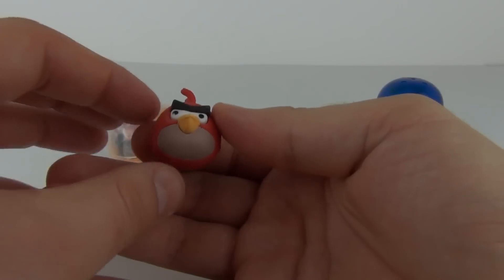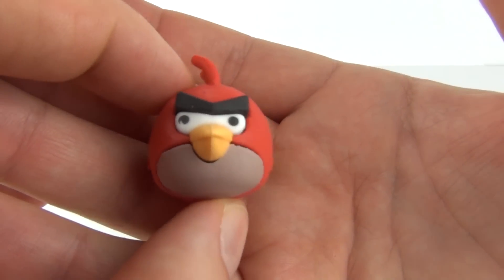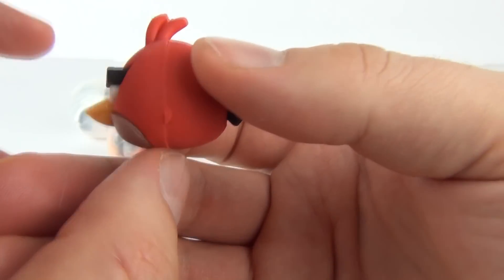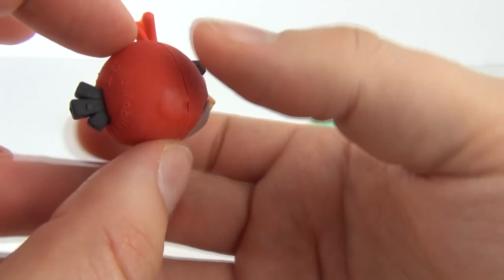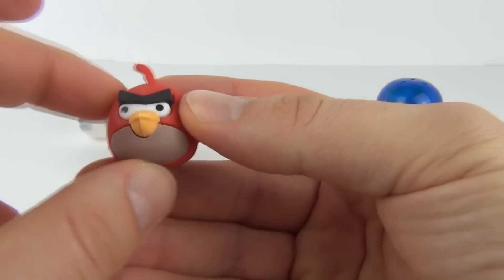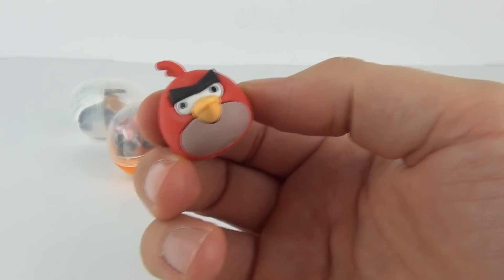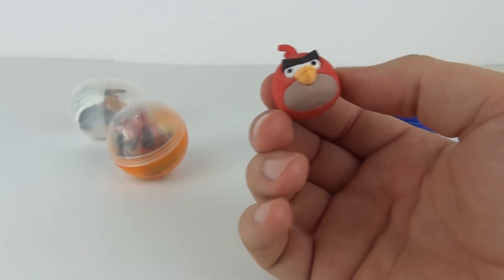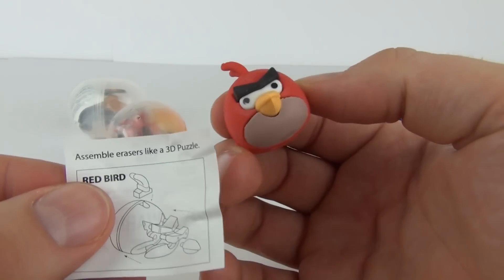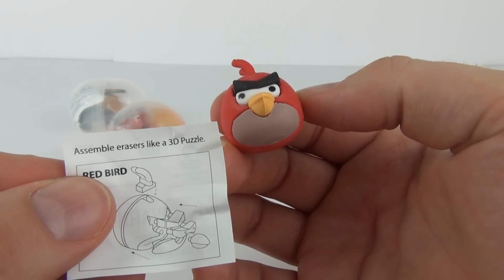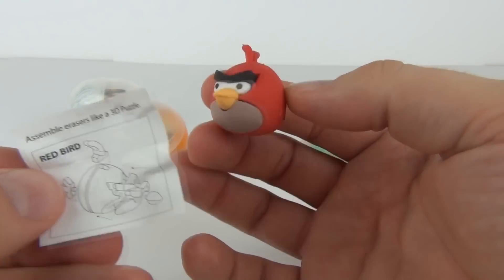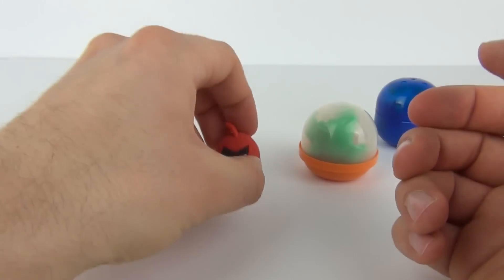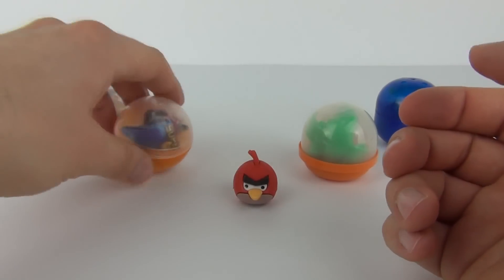And here it is, it is the Red Bird from Angry Birds and it is a puzzle eraser, 3D puzzle eraser. There are lots of little parts to this but how cool is that for £1? And there you can see it does say on the top erasers like a 3D puzzle. So that is pretty cool for such a small price.